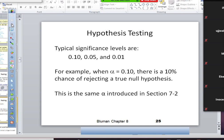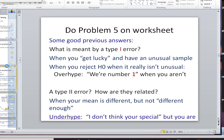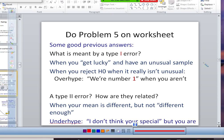So these are a couple of good previous answers that go a little bit deeper than just the basic definition. Type 1 error is sort of when you get lucky and have unusual samples, so then you end up writing a paper when really you probably shouldn't. Or, like someone said, when you reject H0 when it really isn't unusual.